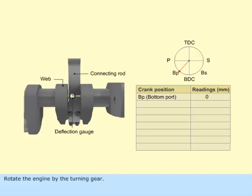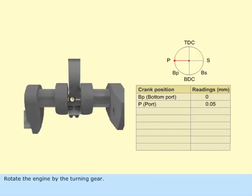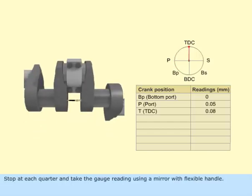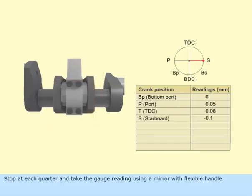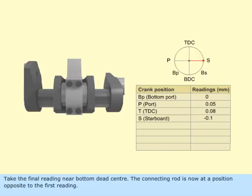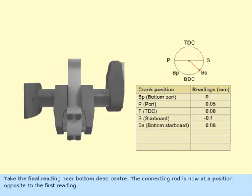Rotate the engine by the turning gear. Stop at each quarter and take the gauge reading using a mirror with flexible handle. Take the final reading near bottom dead center.